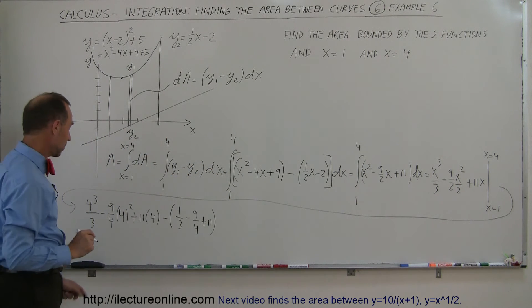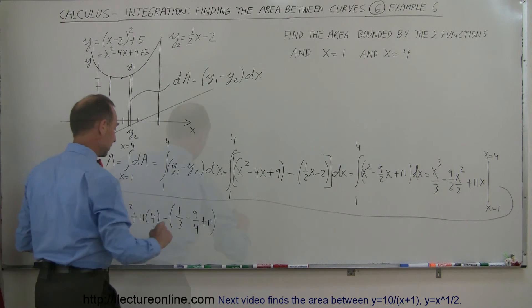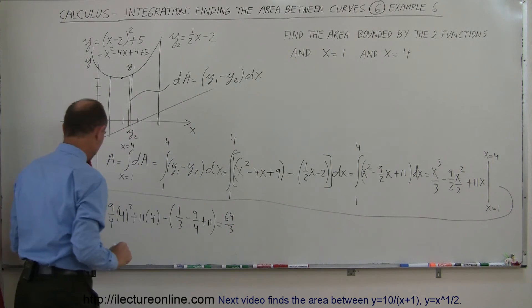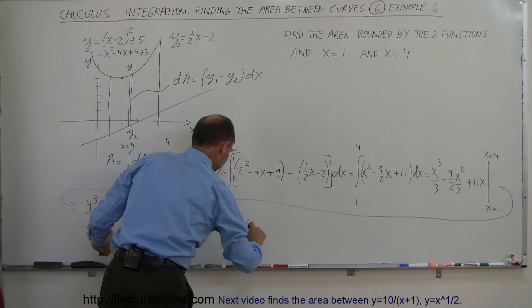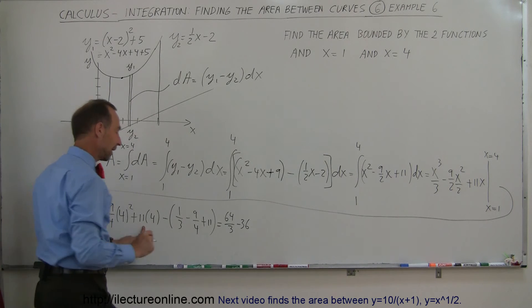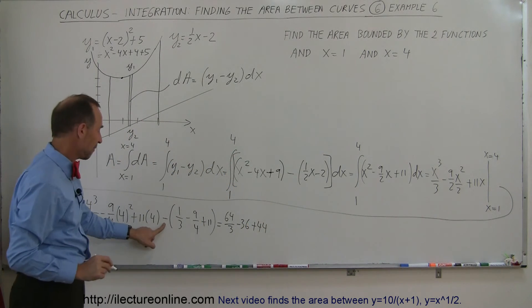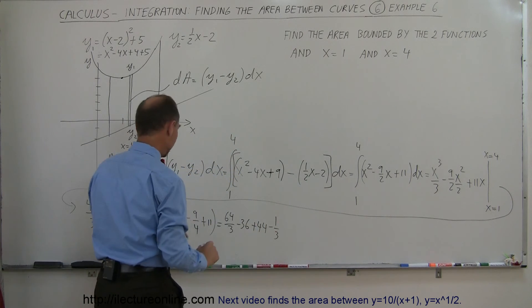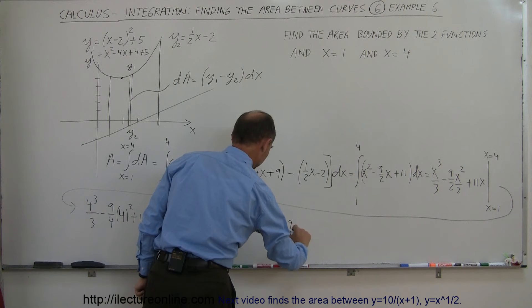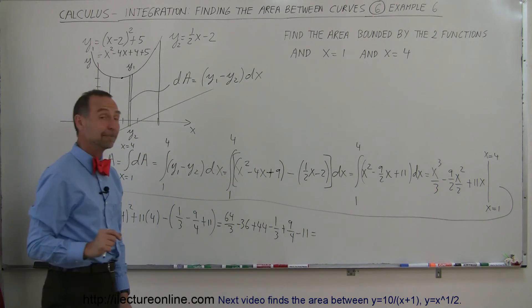Okay, simplifying this a little bit more, I can combine this. I get 64 divided by 3. 4 squared is 16 divided by 4 is 4 times 9 is minus 36. 11 times 4 plus 44. And here I have a minus 1 plus 9 fourths and minus 11.